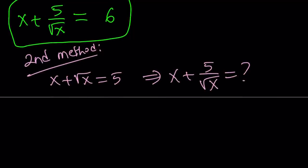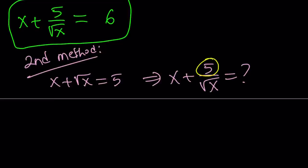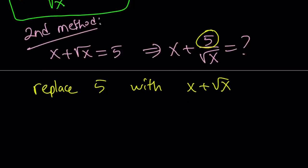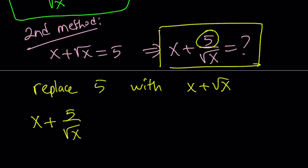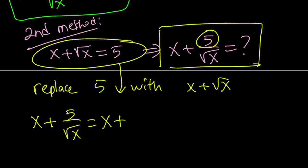Usually, we replace variables with numbers, but how about replacing a number with a variable? So in this case, in our expression, we're going to replace 5 with x plus root x. And let's see what happens. So I'm going to start off with my expression right here. So it's x plus 5 over square root of x. And now, I'm going to replace 5 with this because 5 is equal to that. So let's go ahead and replace 5 with x plus root x.